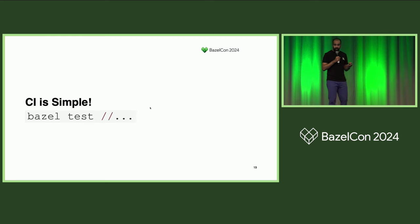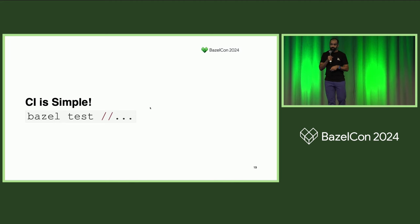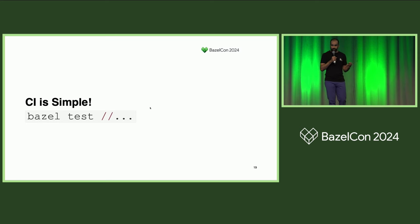CI is simple. Using stateful runners that cache on analysis time and remote cache, we can test the entire code base in under 10 minutes.